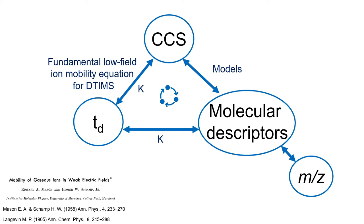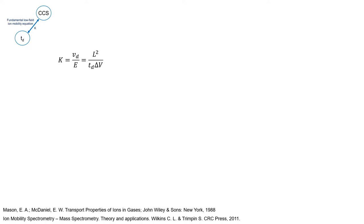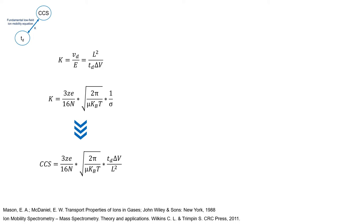The same logic cannot be applied to the CCS, because we do not have a true reference value. The cross-section of an ion is impossible to measure empirically if we consider molecules as dynamic entities, and the only tools available to us are molecular models based on kinetic theory. When we try to link the drift time of an ion with its collision cross-section, we know that the drift velocity Vd is directly proportional to the electric field magnitude E, with the proportionality constant K, called the ion mobility constant.